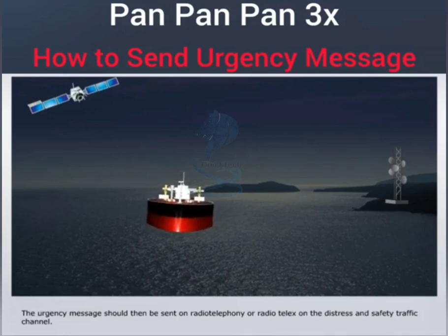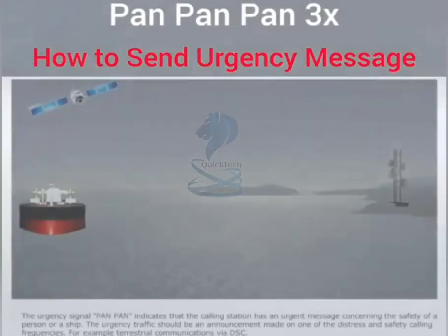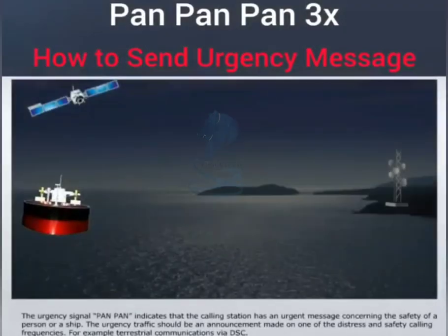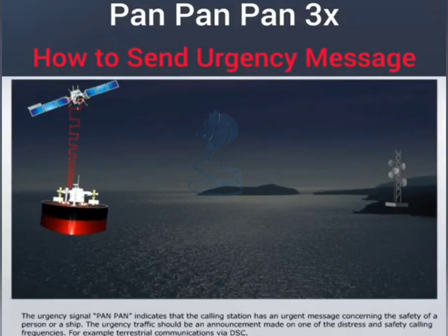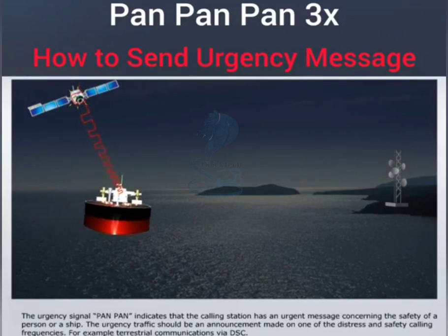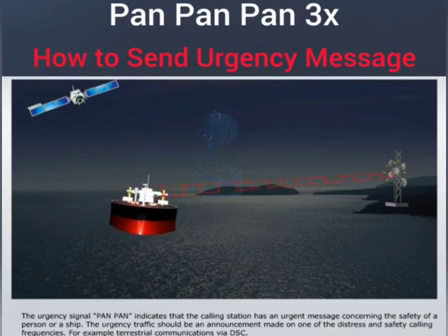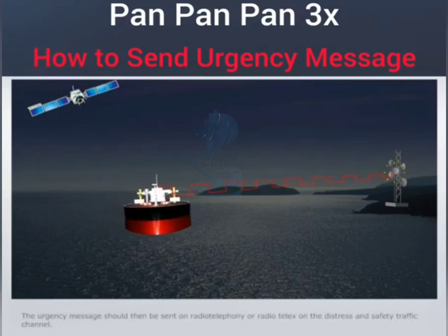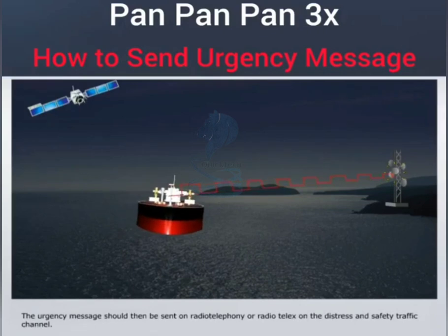Please be alert. The urgency signal PAN PAN indicates that the calling station has an urgent message concerning the safety of a person or ship. The urgency traffic should be announced on one of the distress and safety calling frequencies — for example, terrestrial communications via DSC. The urgency message should then be sent on radio telephony or radio telex on the distress and safety traffic channel.